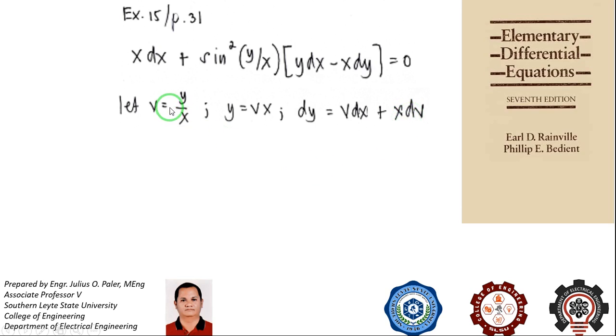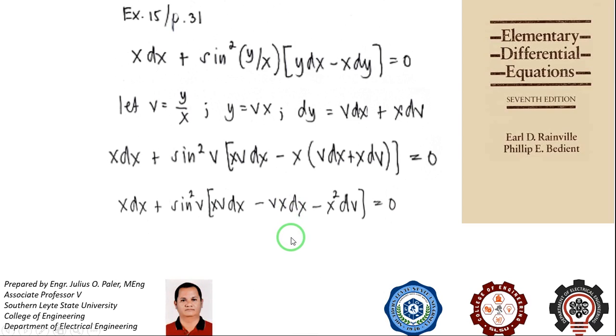Now substituting all these to the differential equation, we'll have this next step. After substituting, we will distribute x to vdx and xdv. That will give us these terms here.